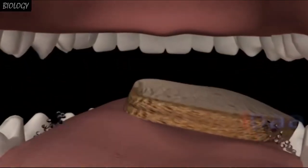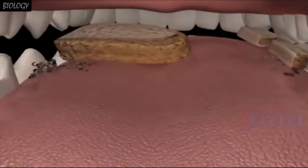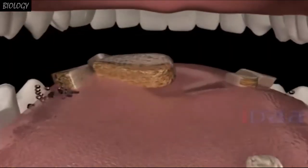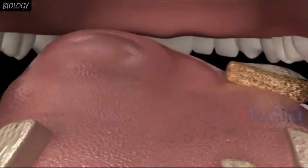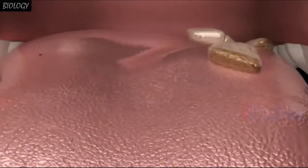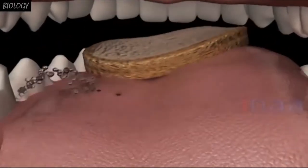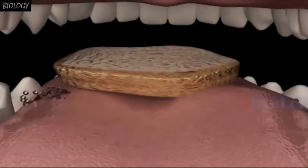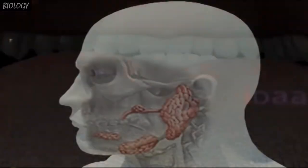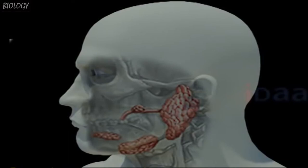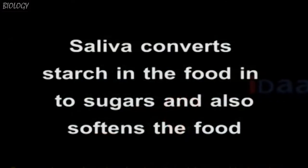During chewing, the large pieces of food are mechanically broken down into small pieces. Teeth help us in doing so. During chewing, food also mixes with saliva. Saliva is secreted from salivary glands located on the lower jaw between the tongue and teeth. Saliva converts starch in the food into sugars and also softens the food.